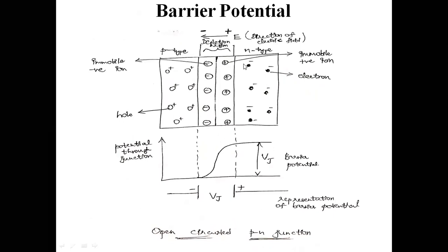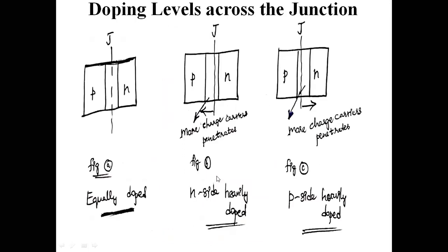Due to the depletion region, some potential is going to be created across this positive and negative charges. I can call this as junction voltage or depletion voltage — I can treat this as depletion voltage or barrier junction voltage, that is Vj. We can also treat this as barrier potential. Later on we will go for doping. If the doping is equal, this line will be at the center of the p and n-type semiconductor material.